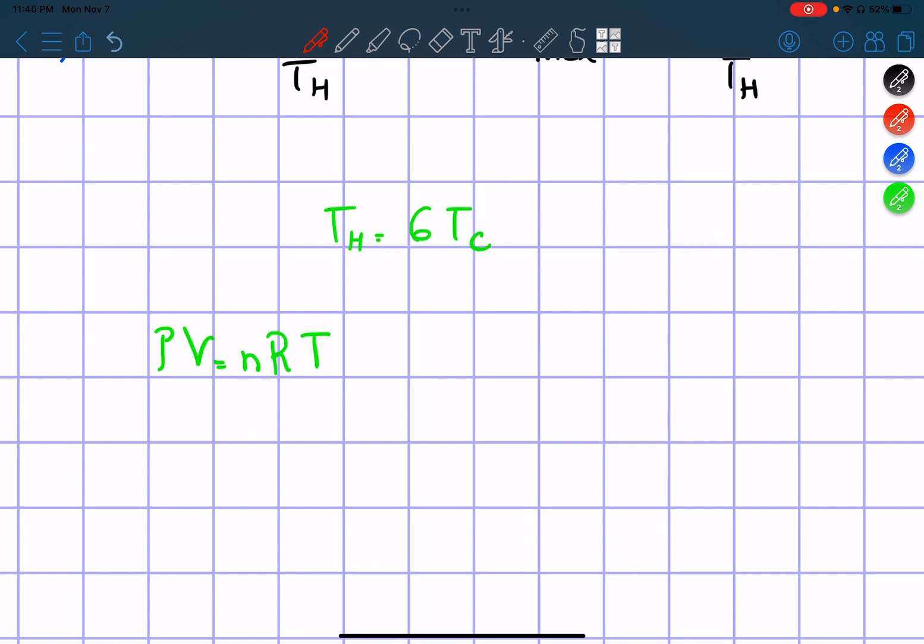We know that PV equals nRT or nKT. These two don't change because it's constant. So every change in V and change in P has to equal change in T.